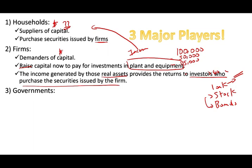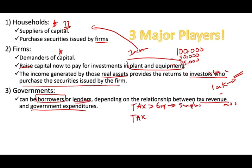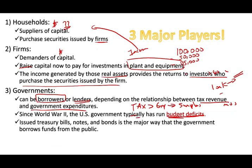The third group is the government, which can be either a supplier or a demander. Sometimes the government needs money and borrows; sometimes it has enough and lends out, depending on the relationship between tax revenue and government expenditure. If taxes exceed expenditure, they have a surplus. If taxes are less than expenditure, they have a deficit.